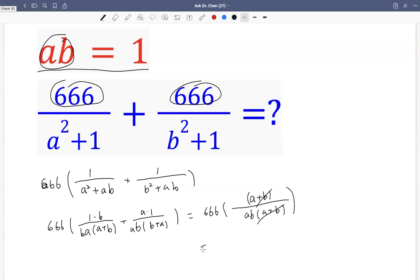So we just have 666 times 1 over AB. But what's AB? AB is given, it's 1. 1 over 1 is 1. So the expression is just 666.